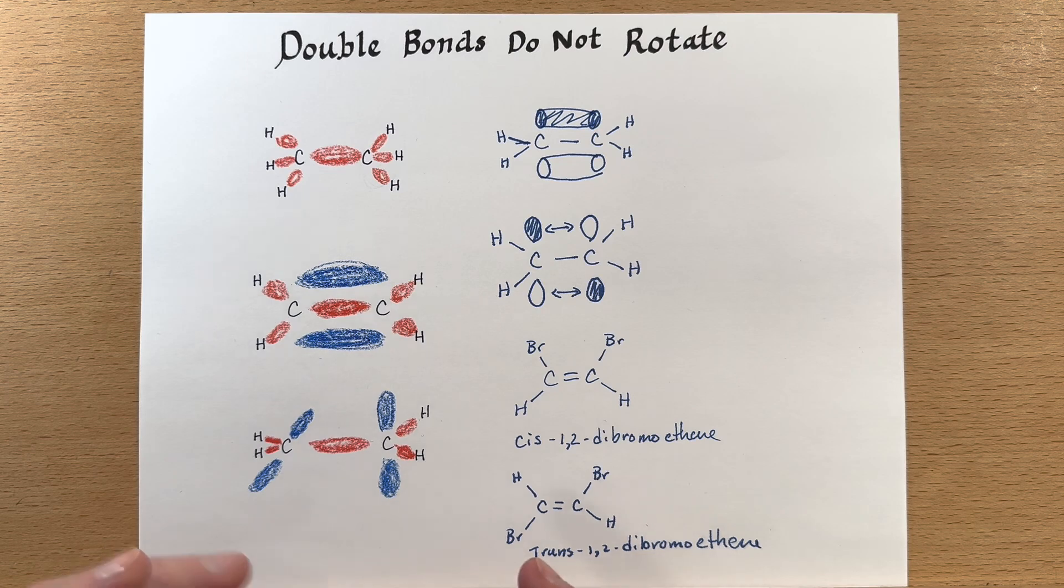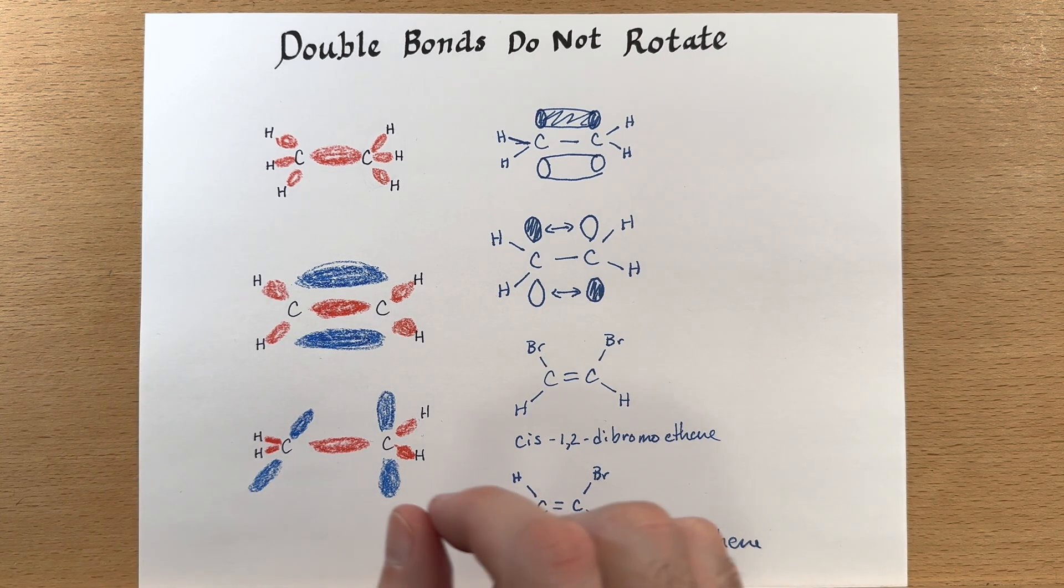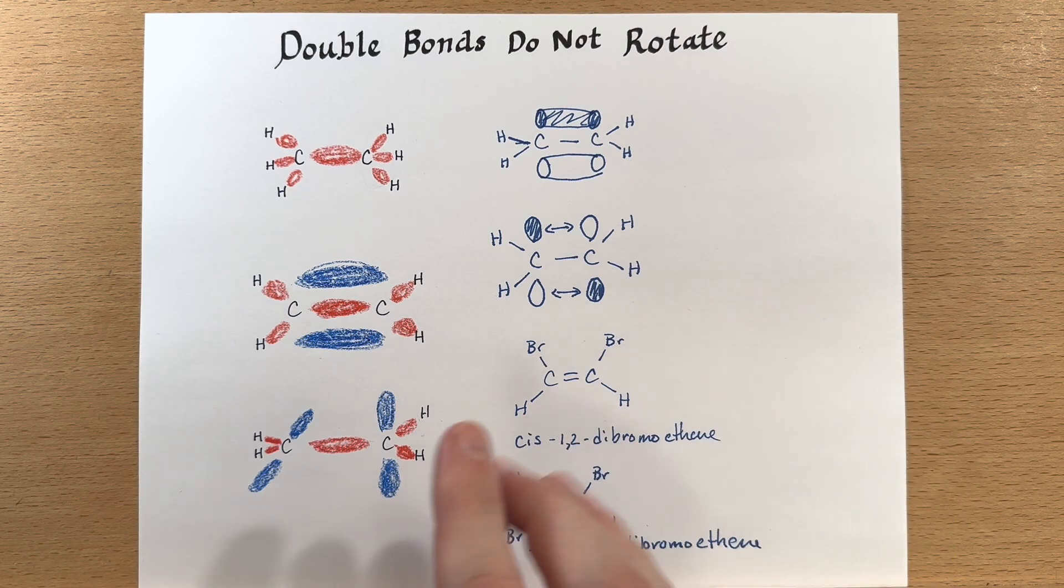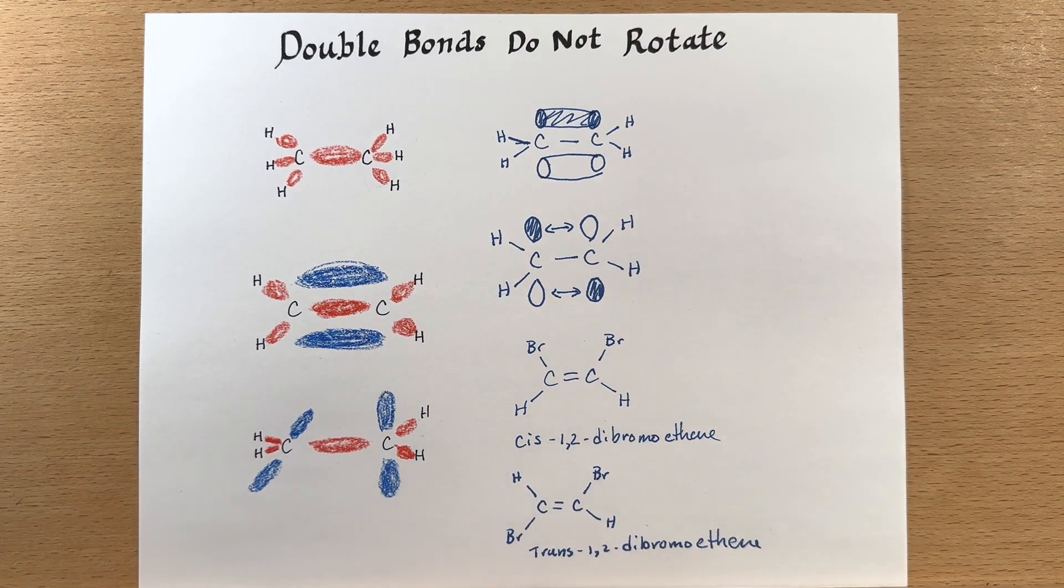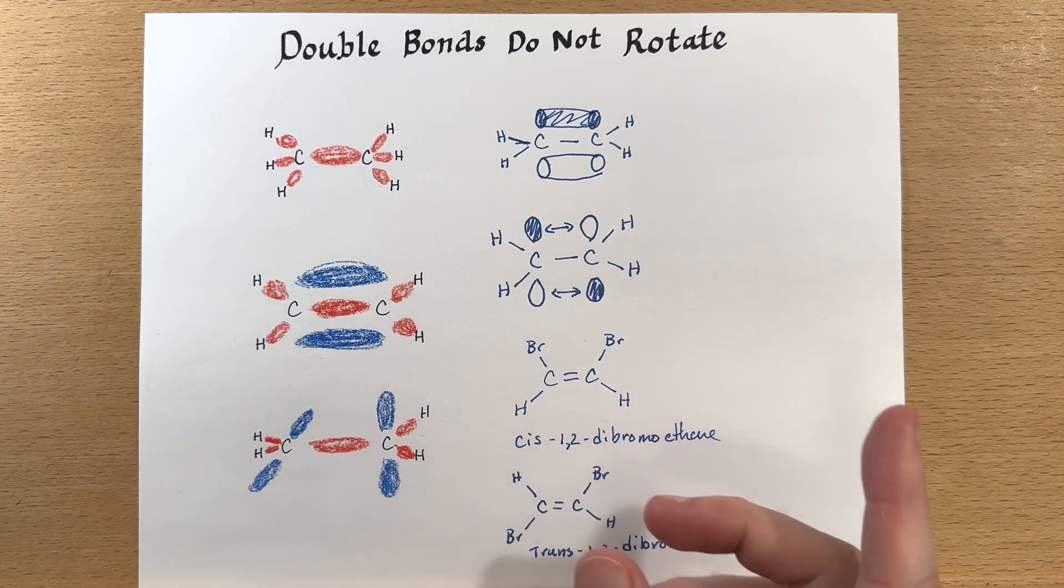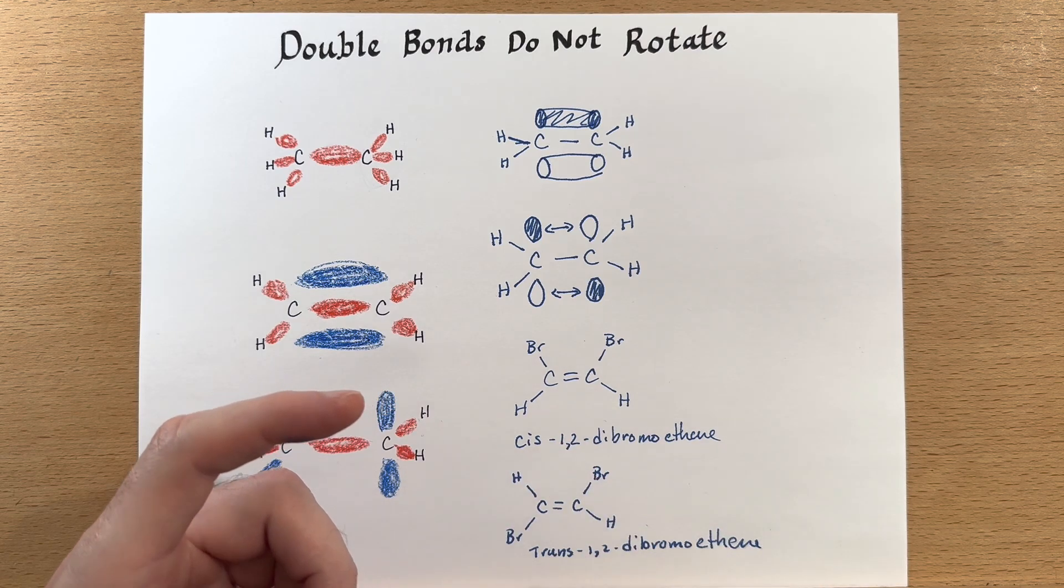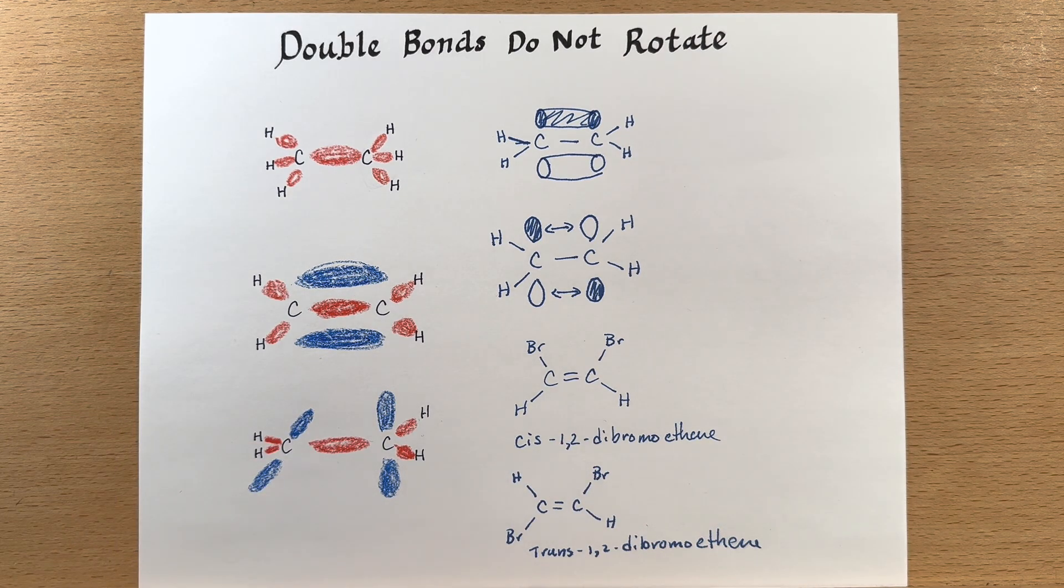And those molecules tend to pack together a little tighter just because the chain is able to be a little straighter. And if you have the cis configuration on some of those fats, then there's a little bend or a kink in the chain. And so they pack looser. And that has an effect on the health.